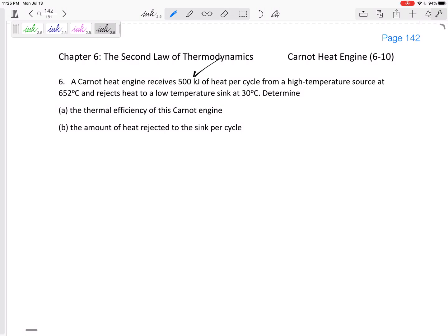What is this telling you? First of all, it tells us it is a Carnot heat engine, so I know I can use the TLs and THs. The heat engine receives 500 kilojoules - that's QH from a high temperature source. That temperature is the TH, but I need to convert that to Kelvin. The 30 degrees is TL but I need to convert it to Kelvin.